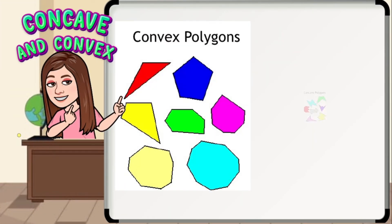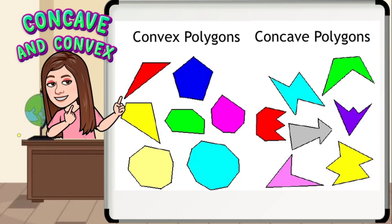Consider the following sets of polygons. Polygons in set A are called convex, while the polygons in set B are concave. A polygon is said to be convex if the lines containing the sides of the polygon do not cross the interior of the polygon. Also, a convex polygon has no angles pointing inwards. More precisely, no internal angle can be more than 180 degrees. If any internal angle is greater than 180 degrees, then the polygon is concave. You can also think that concave has a cave in it.